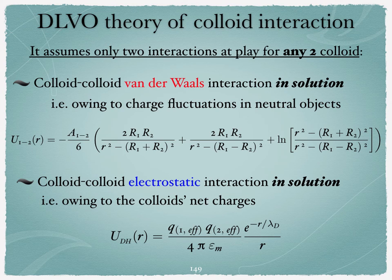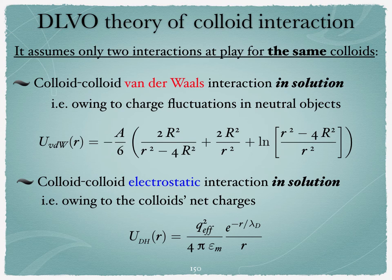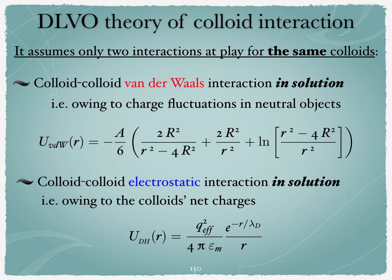In colloid science we are most often interested in the interaction between two colloids of the same kind. In this case the equations simplify significantly: the Van der Waals interaction involves capital R, the particle radius, and a ratio of radius to center-to-center distance squared plus a log term. The electrostatic term simplifies to q effective squared. In DLVO theory we plot these interactions and examine how their sum gives different qualitative features depending on parameter values.